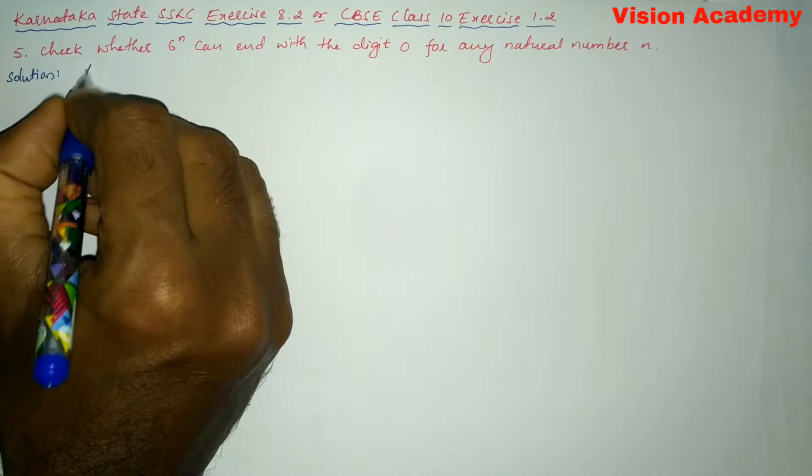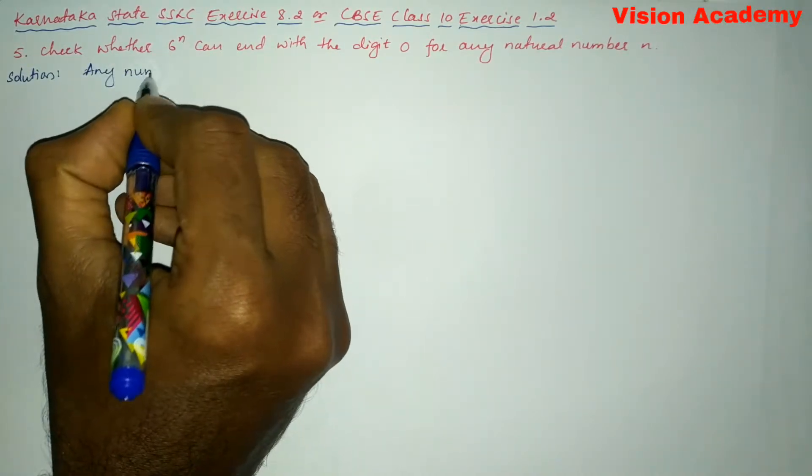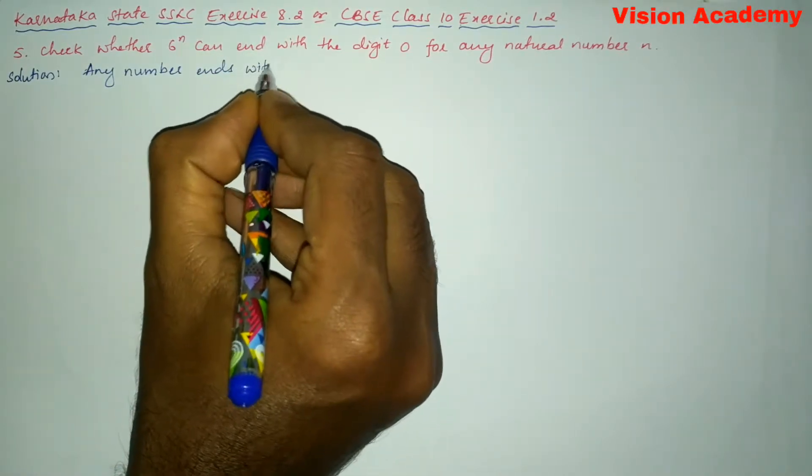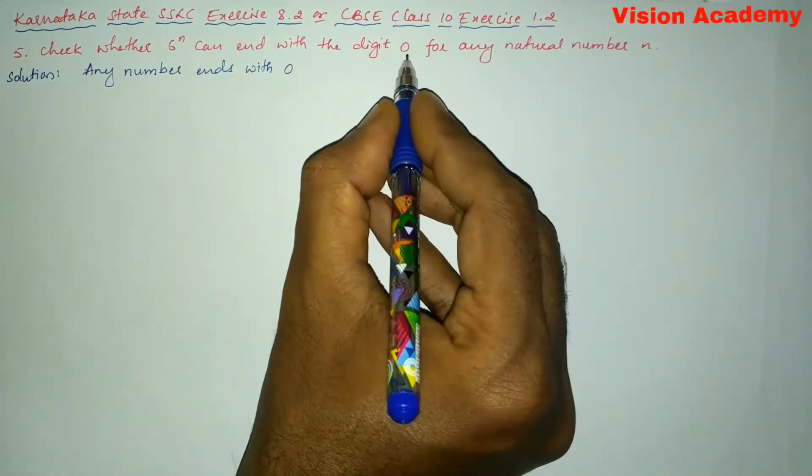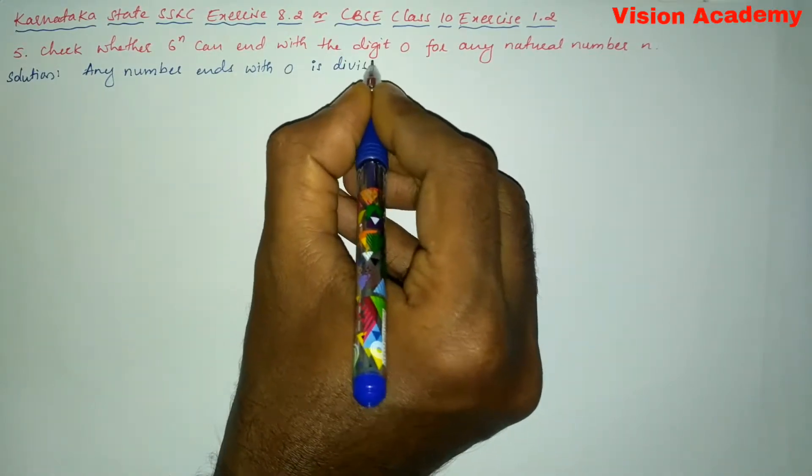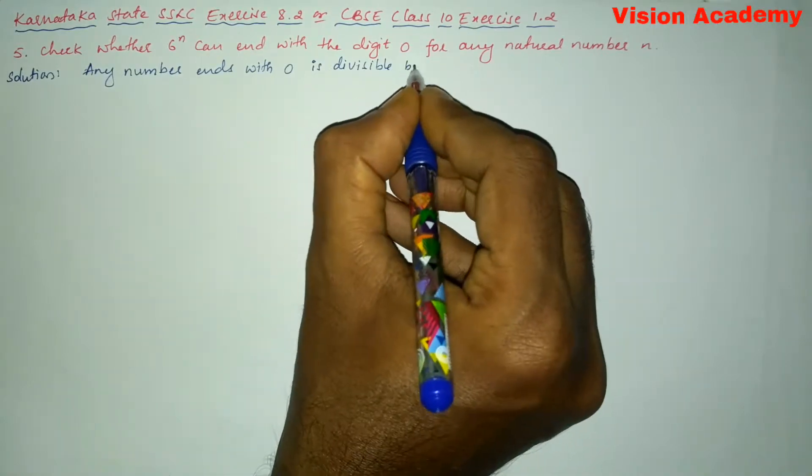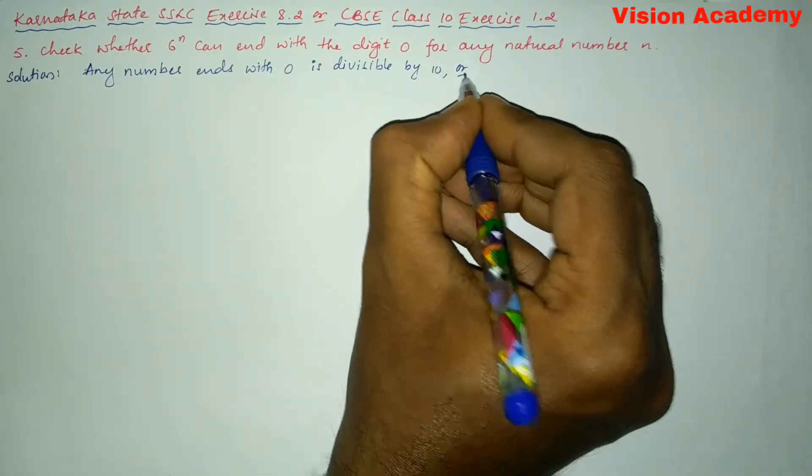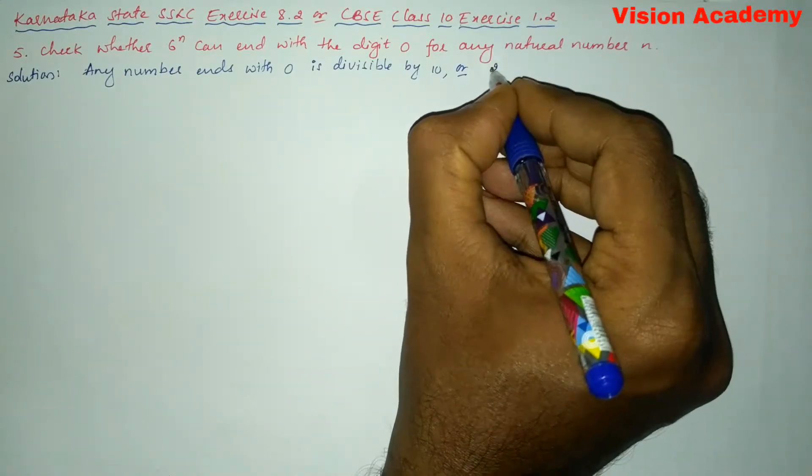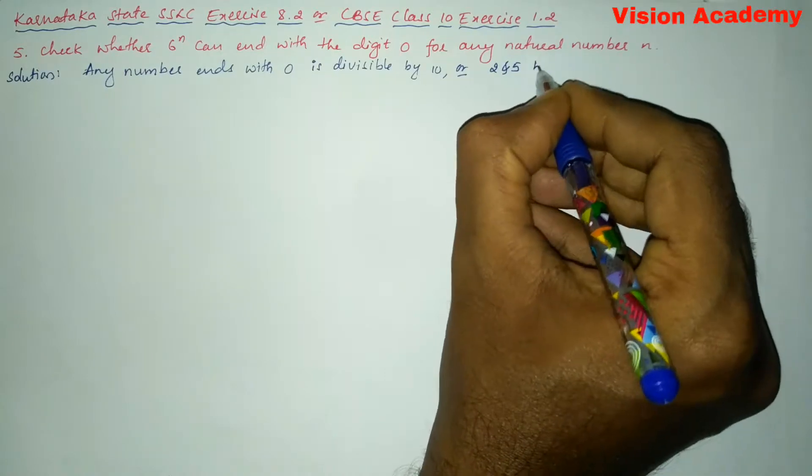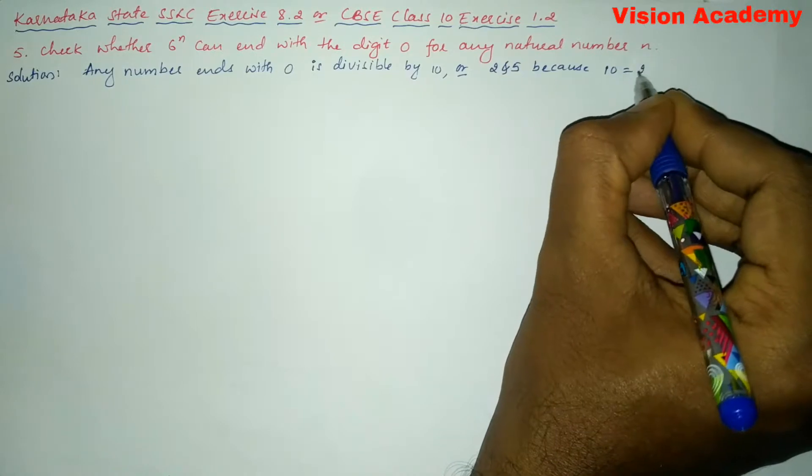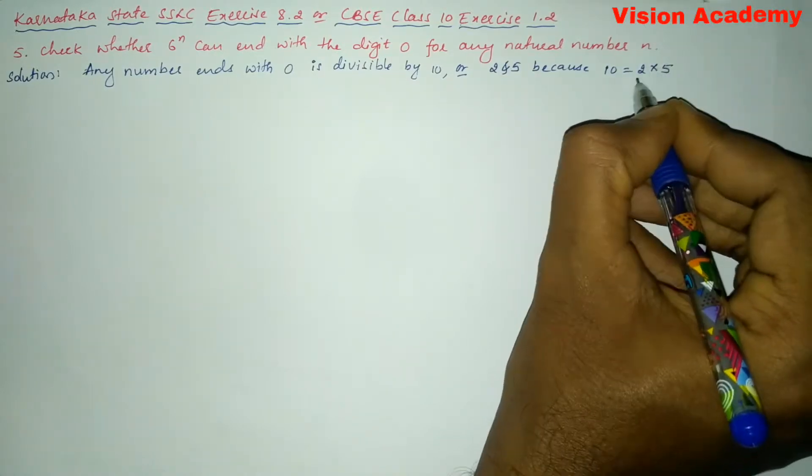Let us write any number ends with 0 which is already given in the question is divisible by 10 or it is divisible by 2 and 5, because we can say that 10 is equal to the product of these two prime factors.